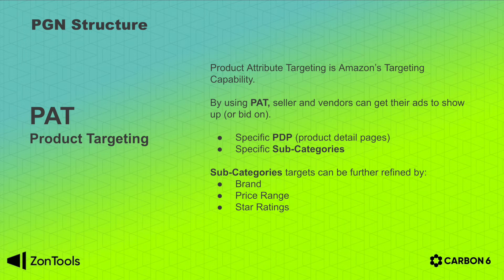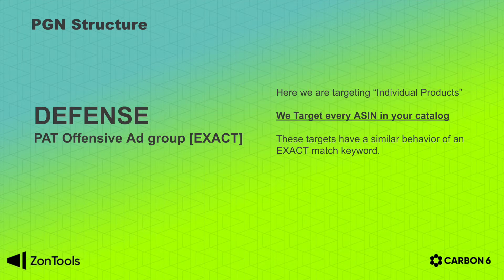You can negate ASINs away from the PAT, which is fantastic because if you are bidding on an ASIN that is not working, you can negate the ASIN. PAT ads can show up on all the same pages that sponsored product ads can, but in different locations. The first ad group that we will create within the PAT campaign is the defense ad group. The goal of this ad group is to defend your listing and take as much traffic as possible within your own listing with your own product in order to improve customer retention. Here we are targeting individual products and every ASIN in your catalog.